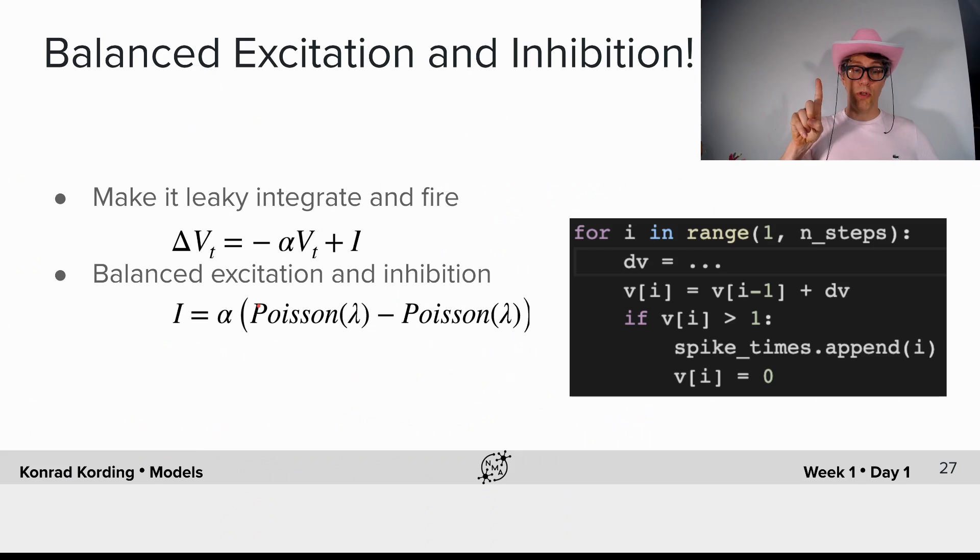and a random number of spikes that are inhibitory that make the membrane potential go down, or that is a negative current.